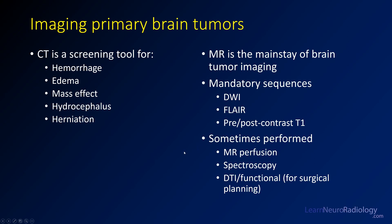There are advanced tools that are somewhat optional. You can perform MR perfusion and spectroscopy. For surgical planning, DTI (diffusion tensor imaging) or functional MRI with BOLD imaging can be used to map the tumor's location relative to functional brain areas.